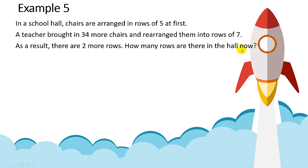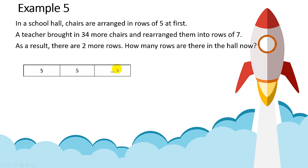At the start, each row has five chairs. You put a dot here because you do not know how many rows there are at first, so you put a question mark here. Now, the teacher brought in 34 more chairs.